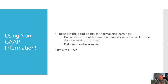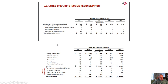On the downside, when you start to look at it, normalizing earnings sets aside items that are generally the result of poor management decisions in the past, and their estimates used in valuation. And the last thing — it's not GAAP.